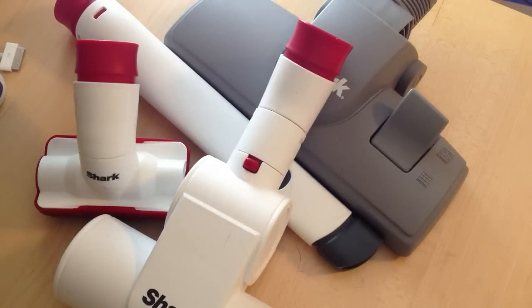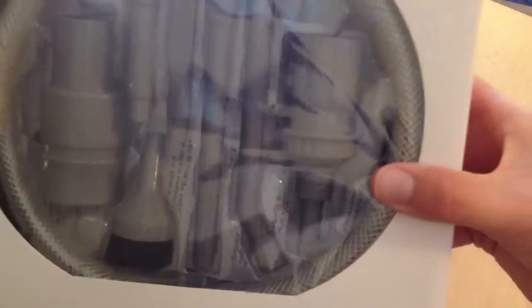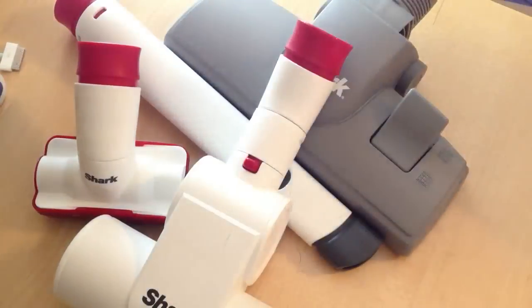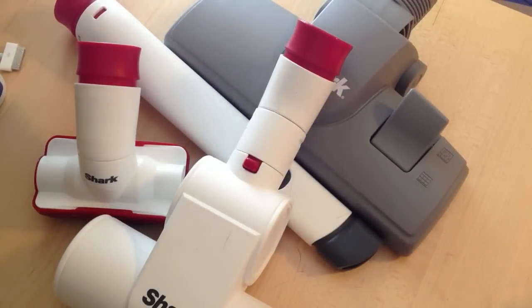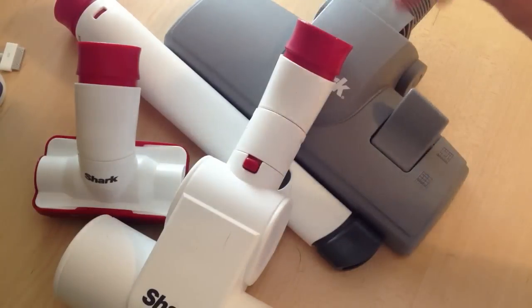And then the last thing for tools is it does come with the detailing kit, which I actually review the whole kit in another video. So yeah, that is the attachments that come with the Shark Navigator Rotator.